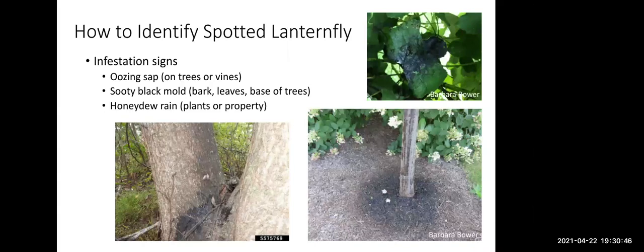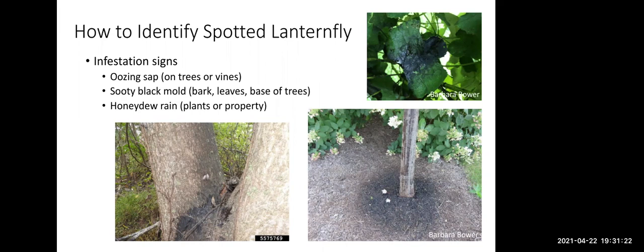Another way to identify spotted lanternfly is through the damage they do. Telltale signs include oozing sap coming off trees or vines, and sooty black mold either at the base of trees or on the leaves — you can see a grape leaf covered in black sooty mold. The black sooty mold can coat property or bark anywhere the honeydew rain can reach. That sticky honeydew rain is another indicator, though if you're dealing with that, you can probably already see quite a few adults.